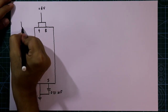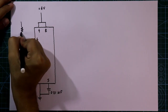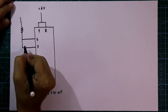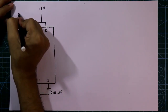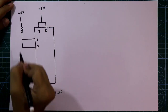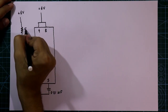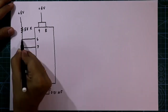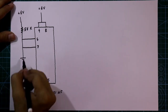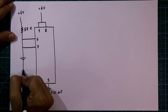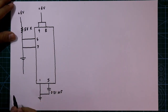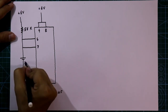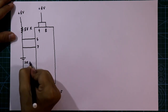One resistor is connected with pin number 6 and 7, and another pin of the resistor is connected to plus 6 volt. The value of the resistor is 56 kilo ohms. Then again with pin number 7, we connect one capacitor, and the negative pin of the capacitor is connected to ground. Its value is 100 microfarad.